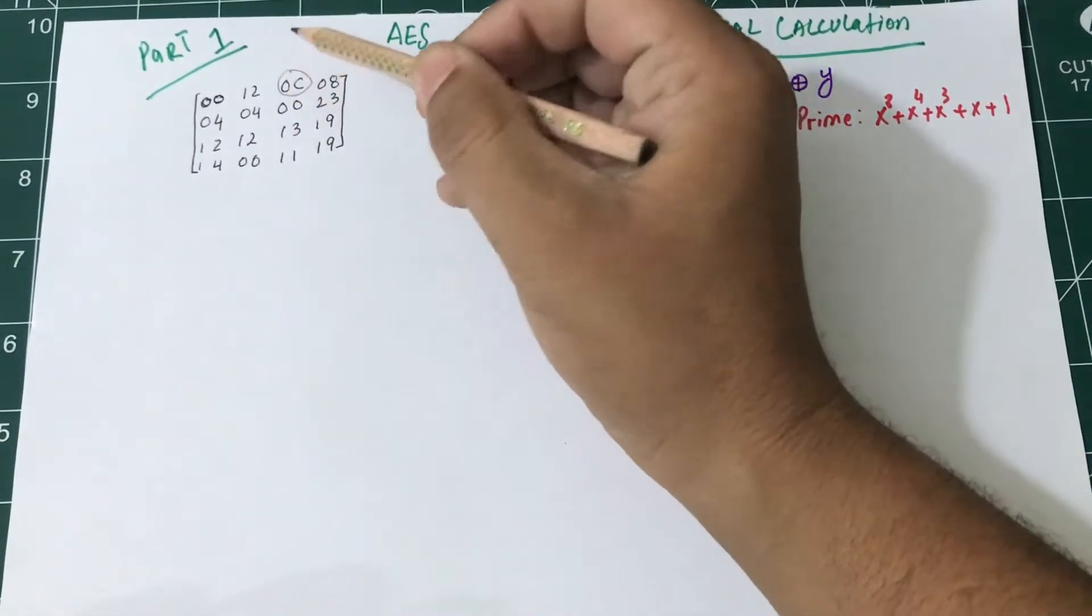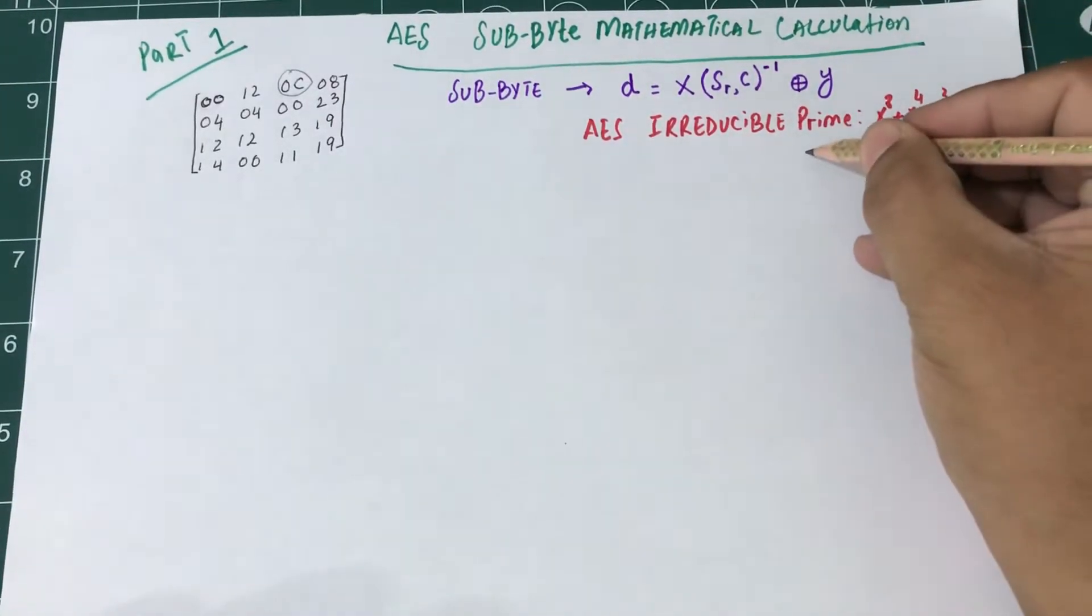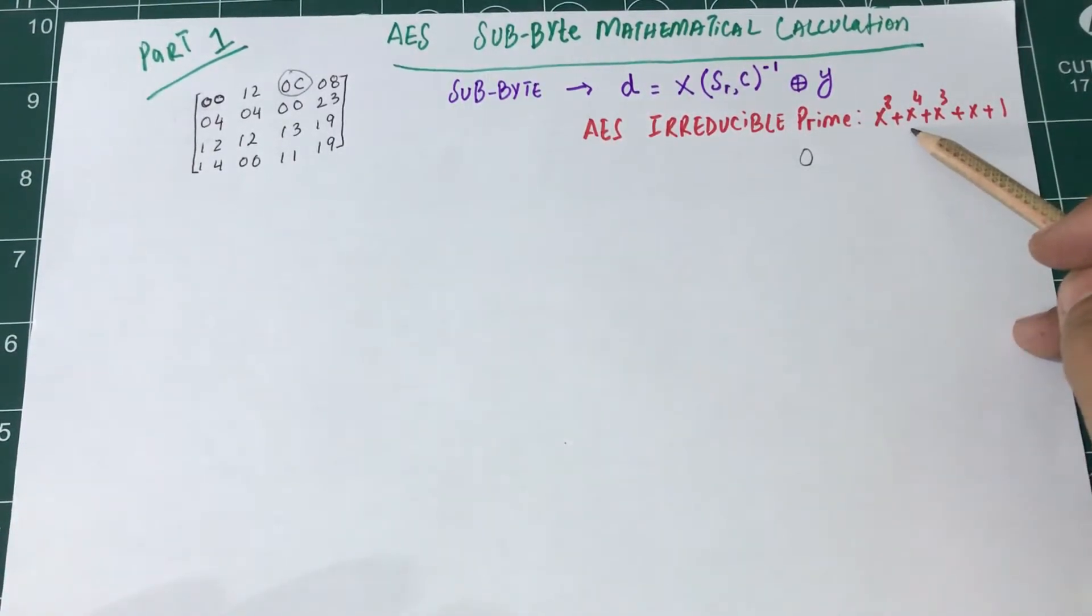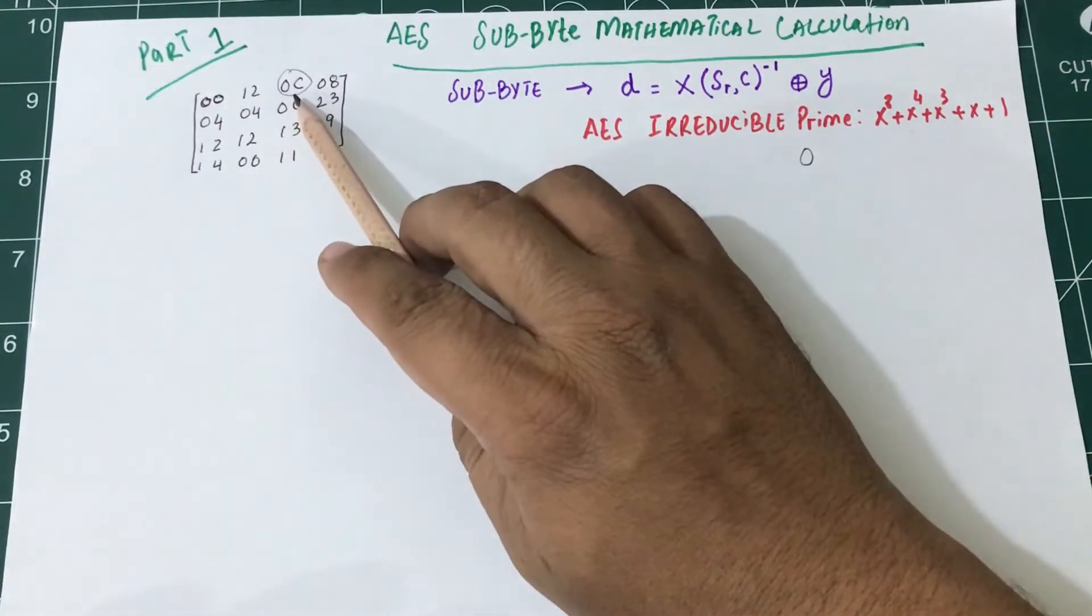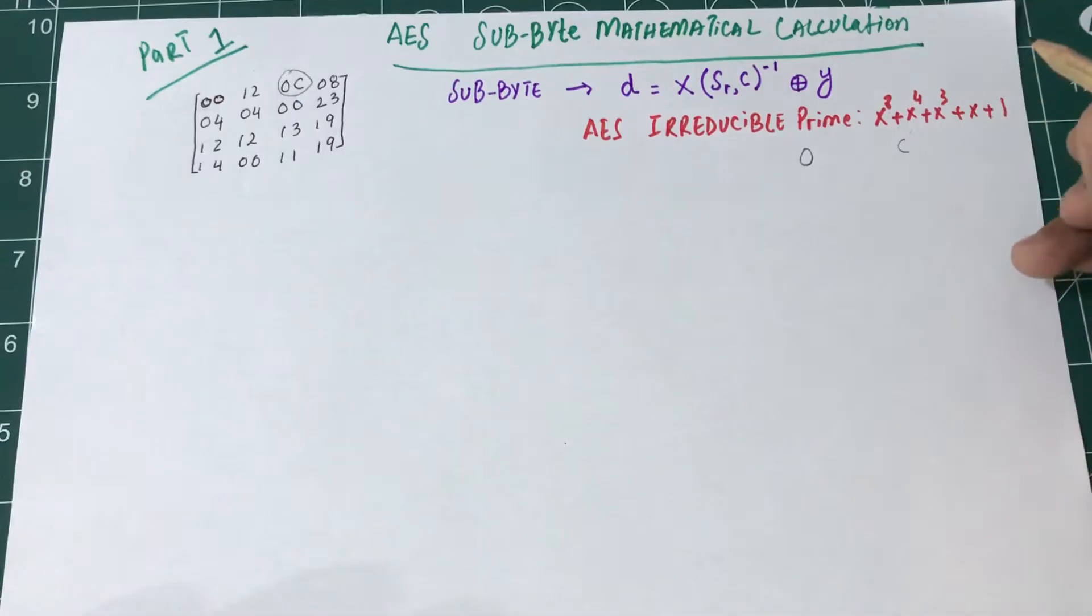This is the value I want to transform. I know AES uses something called an irreducible prime, so this is the number I'm going to use to reduce everything in the AES algorithm: x^8 + x^4 + x^3 + x + 1. I'm going to transform the 0C into polynomial form.